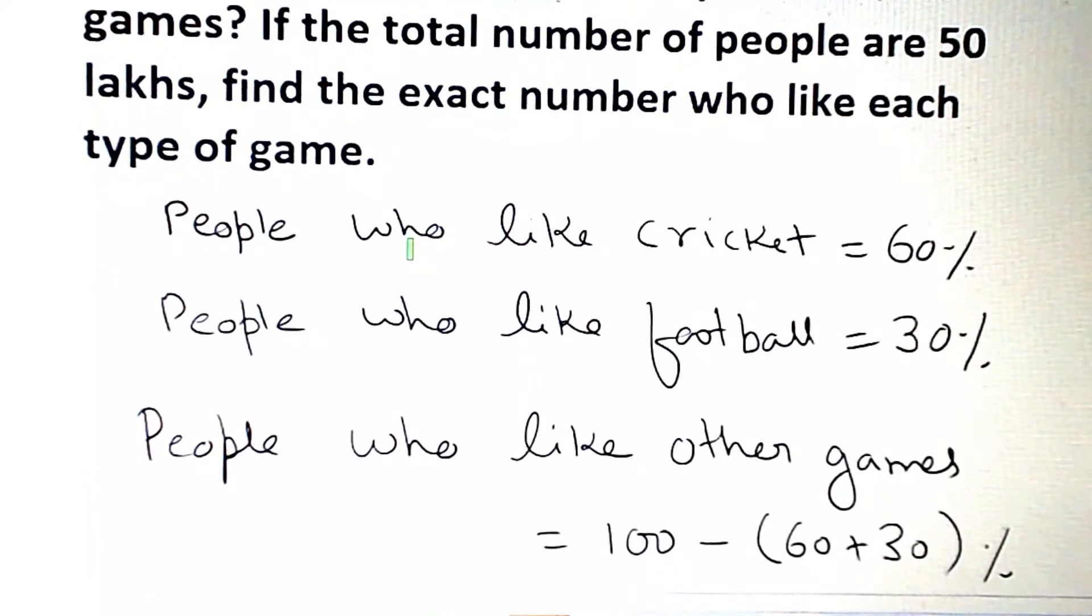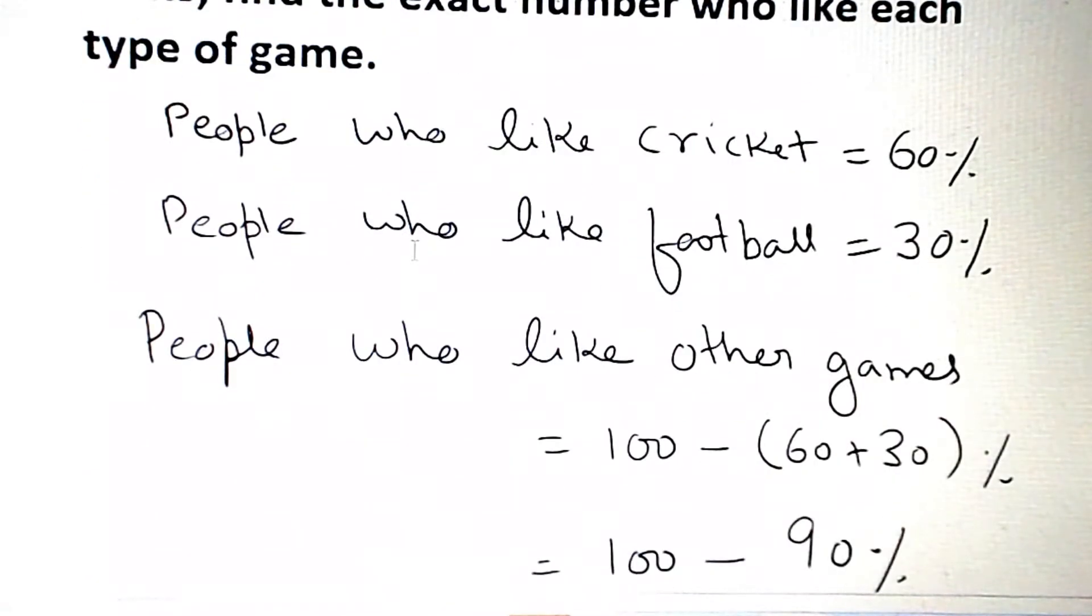People who like cricket equals 60%, people who like football equals 30%, so people who like other games equals 100% minus cricket and football.